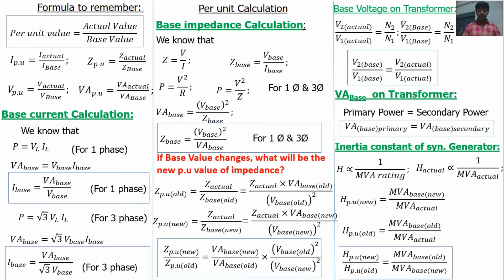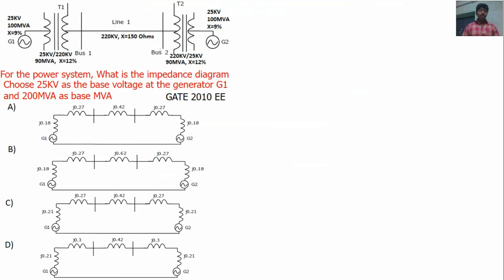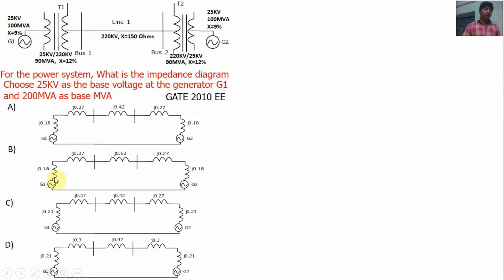Those are the formulas. Next, we will discuss some problems from competitive examinations. The first question was asked in the GATE 2010 examination. A power system diagram is given and we have to find the impedance diagram. The base voltage is 25 kV on the generator side and 200 MVA base power, but the generator rating is 100 MVA. In option A, the generator per unit impedance is 0.18.